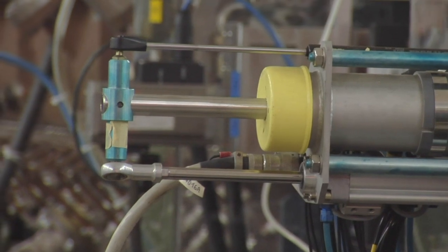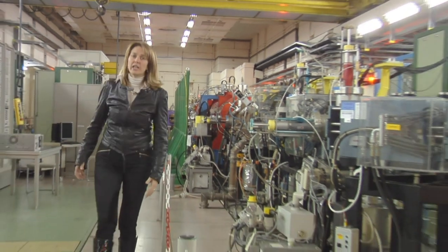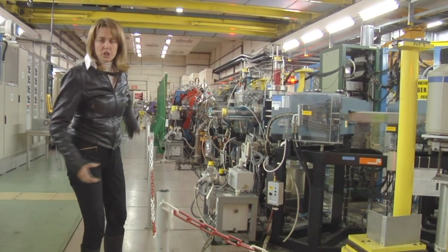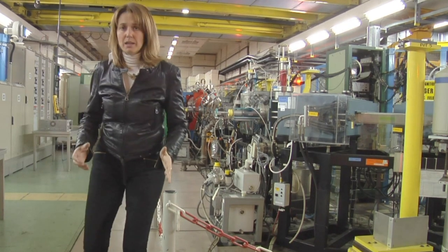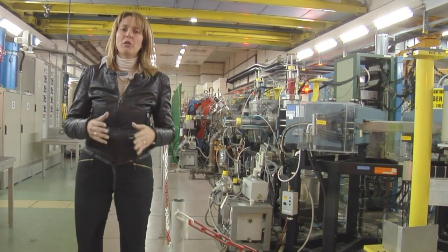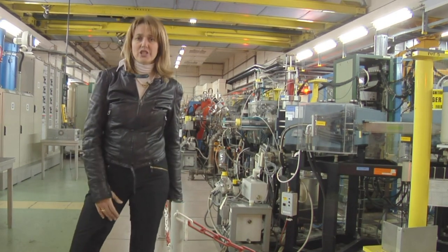This is LINAC 3, the linear accelerator especially built at CERN to inject heavy ions into the CERN accelerator chain. It is right here, at the beginning and then at the end of this machine, that lead atoms are stripped of their electrons before being transferred to the first circular accelerator on their path to the LHC.